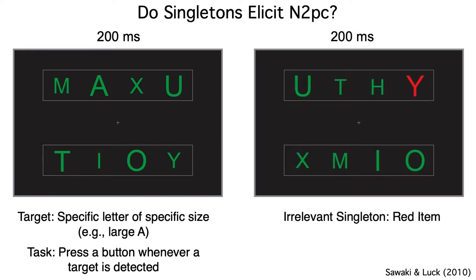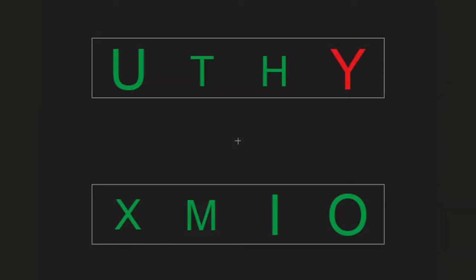On some trials, the array contained a red singleton item. The singleton was never the target and the subjects were informed of that, so they had no reason to voluntarily focus their attention onto the singleton. But that red item really pops out, doesn't it? So what do you think? Did the singleton capture attention and produce an N2PC?